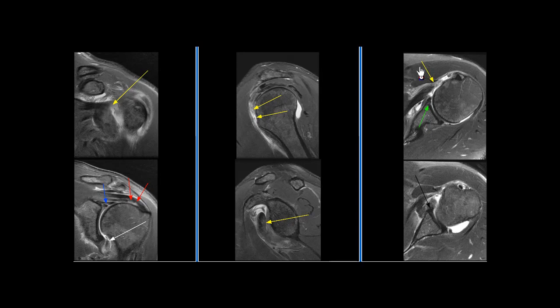This is a 57-year-old male with a history of recent anterior shoulder dislocation and complaint of shoulder pain. MRI examination of the left shoulder is performed.